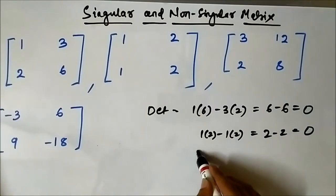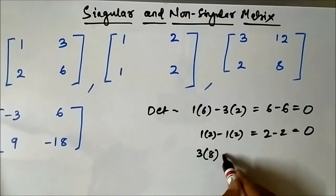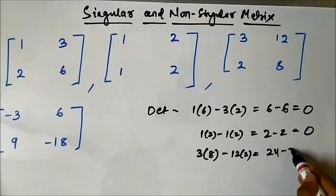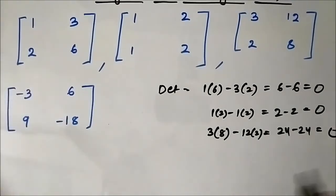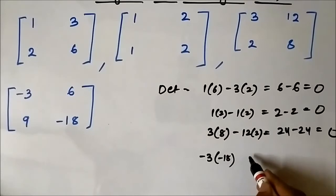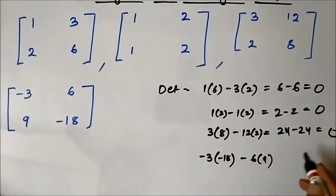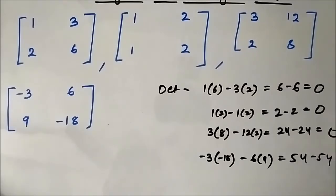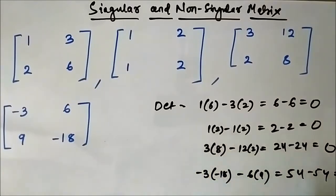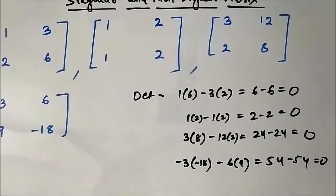For the third matrix, it is 3×8 minus 12×2, which is 24 minus 24, which is equal to 0. For the fourth one, it is (−3)×(−18) minus 6×9, which is 54 minus 54, equals 0. So these are some examples of singular matrices of order 2 — the determinant values are all equal to 0.